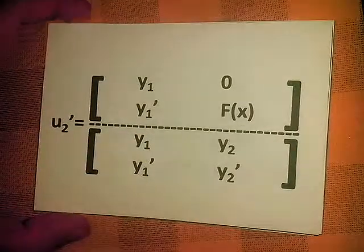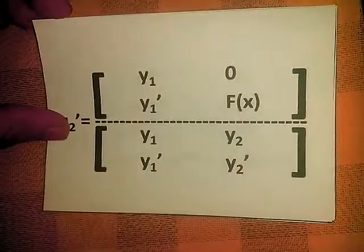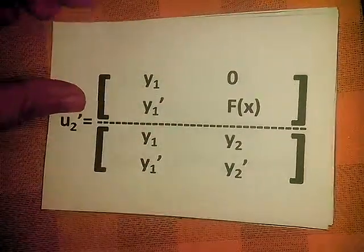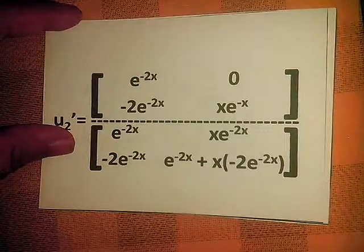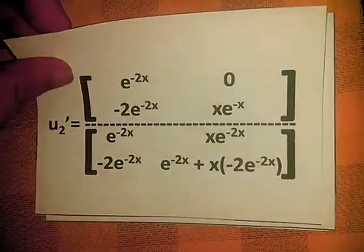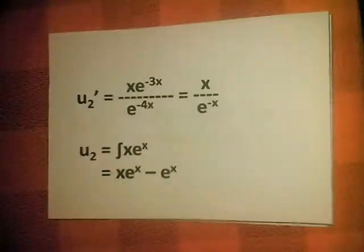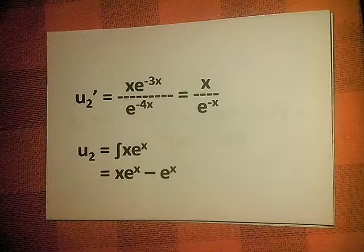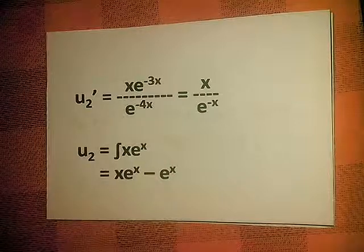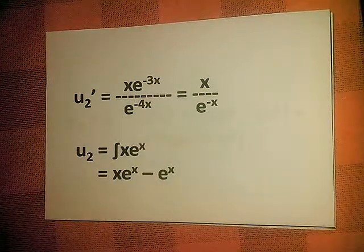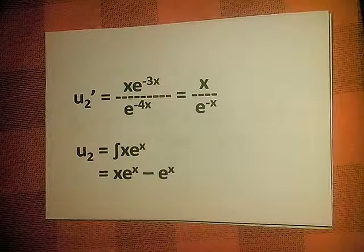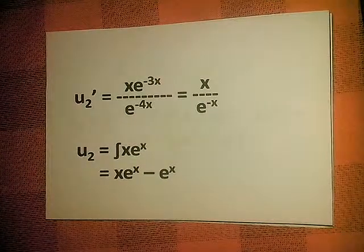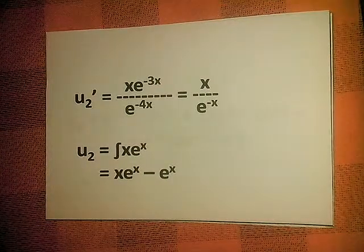We repeat the process to get u2. Substituting the values, we apply the same process as for u1'. We get u2' = x·e^(-3x) / e^(-4x), which simplifies to x·e^(x).